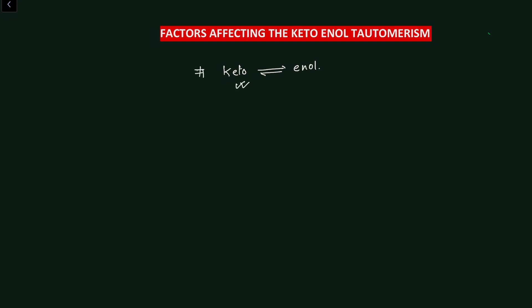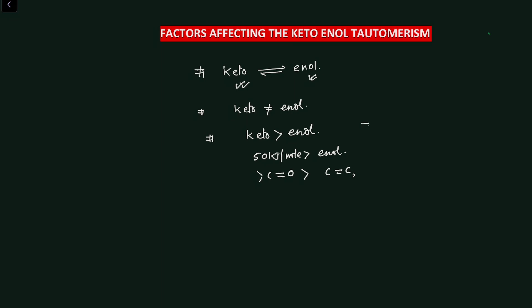The keto and enol tautomers are not equally stable — the keto form is generally more stable than the enol form. The keto form is about 50 kilojoules per mole more stable than the enol form. The reason behind this is that the carbon-oxygen double bond is much stronger than the carbon-carbon double bond of the enol form. So generally, the keto form is more stable than the enol form.